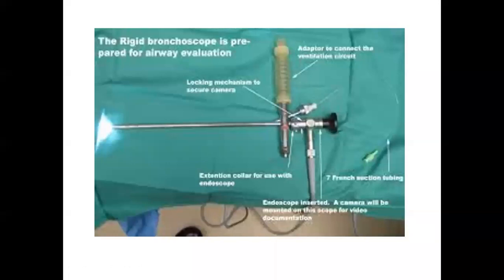Bronchoscopy is flexible as well as rigid. In ENT, flexible bronchoscopy is used for diagnostic purposes, and rigid bronchoscopy is used for therapeutic purposes. The indications of bronchoscopy are either therapeutic or diagnostic. For therapeutic purposes, the main indication is removal of a foreign body from the trachea and bronchus. For diagnostic purposes, rigid bronchoscope can be used but is rarely performed now; flexible fibre optic bronchoscopy is preferred.